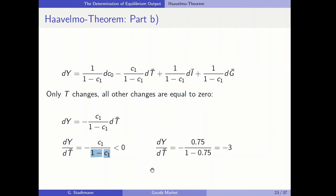This has to be interpreted in the following way: in case that the government increases taxes, this has a negative impact on GDP — GDP will decrease. By how much? Let's plug in the numbers: c1 is equal to 0.75, so we get dY over dT is equal to minus 0.75 divided by 0.25, so the overall expression is minus 3. When the government increases taxes by one unit, GDP will decrease by three units.